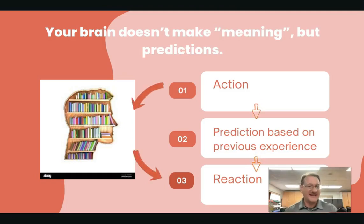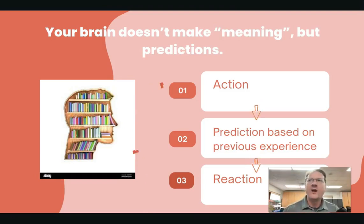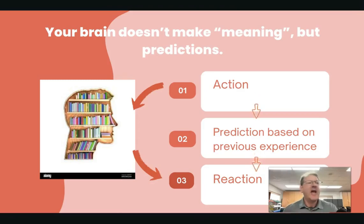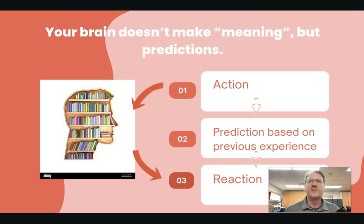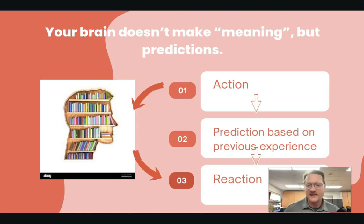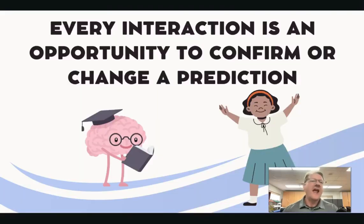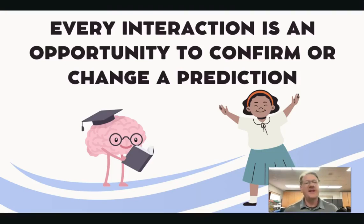Anytime the brain is wrong about a prediction, that's called learning, and it will change how the brain thinks in the future. That's brain plasticity — anytime the brain is wrong about a prediction and starts to change its way of thinking. From then on, the person who didn't think they were going to have a great experience in class will start believing they can do well because they really enjoy that class. Every interaction is an opportunity to confirm or change a prediction.